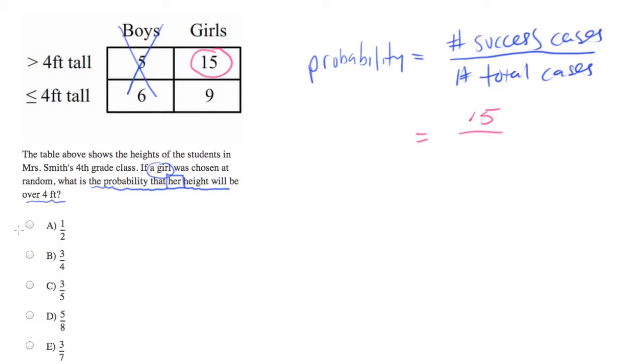Now, the next question becomes, what is the total number of cases that we could have? Well, if we know we're picking a girl, there's fifteen plus nine total girls. So the total cases will be the sum of those two, which is twenty-four.